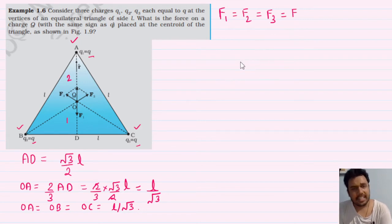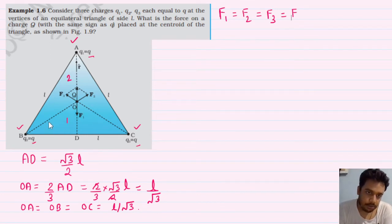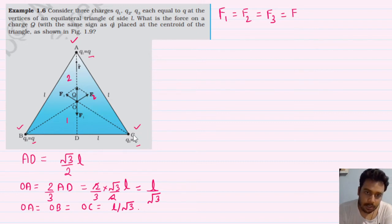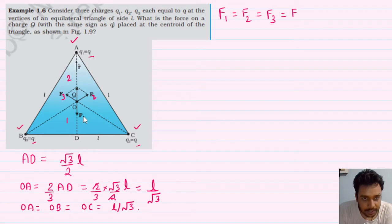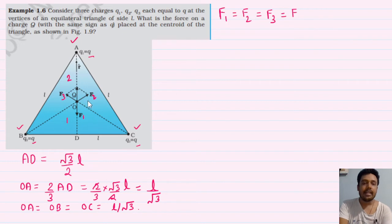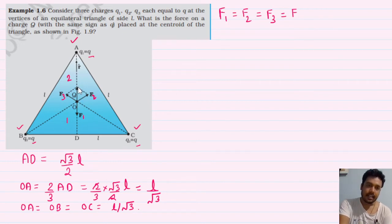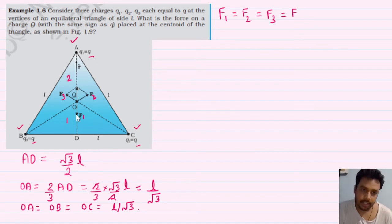अब देखो — diagram में साफ दिख रहा है कि दोनों positive charge हैं, तो repel करेंगे। तीन forces लग रहे हैं। पहले F2 और F3 का resultant निकालूँगा, और उसके बाद उस resultant को F1 के साथ solve करूँगा। तो पहले resultant of F2 and F3 निकालते हैं।